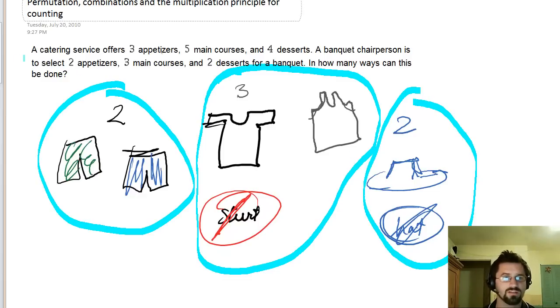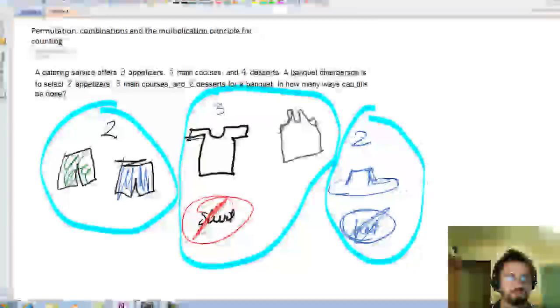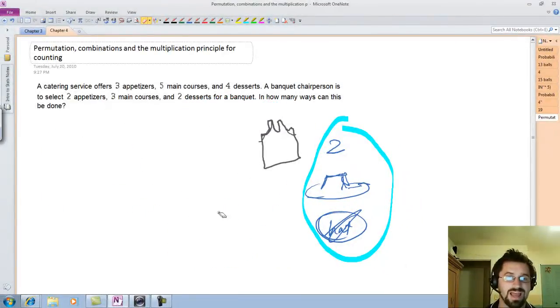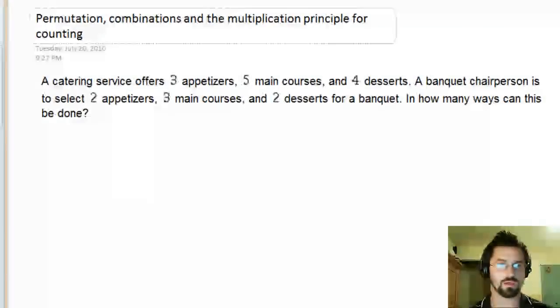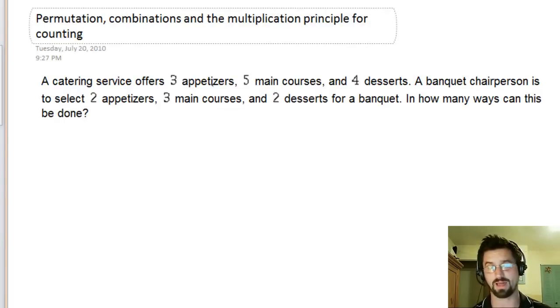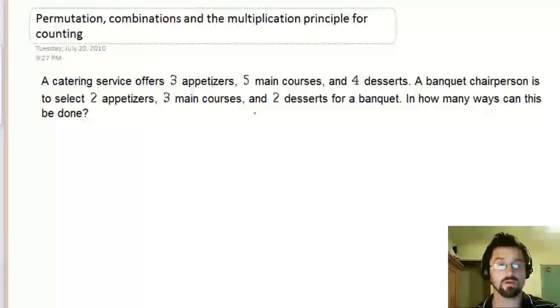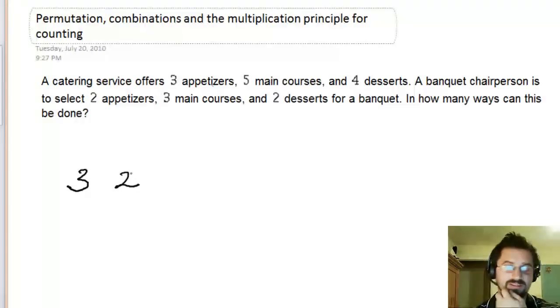Using that rule, we're going to answer these questions that they give us. So, the first thing you have to ask yourself is am I dealing with permutations, combinations, or a mix of both? And when I look at this, it says a catering service offers three appetizers, five main courses, and four desserts. A banquet chairperson is to select two apps, three main courses, and two desserts for a banquet. So, they're going to choose, out of the three appetizers, they're choosing two. Now, does it matter what order they choose them in? He's just picking, or she's just picking. So, how many ways can this be done? The answer is three choose two.